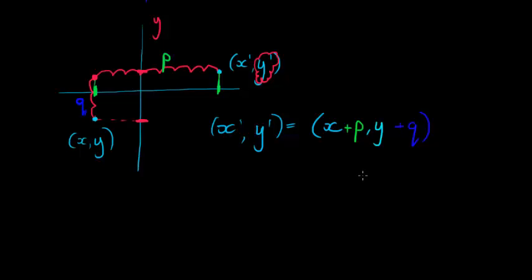Now if p and q was instead being subtracted it would be a different story. If I subtracted p units I would have been going in that direction, and if I was to subtract q units from y I would have gone in the downwards direction. So what we have now is that my new set of coordinates is given by (x+p, y+q).